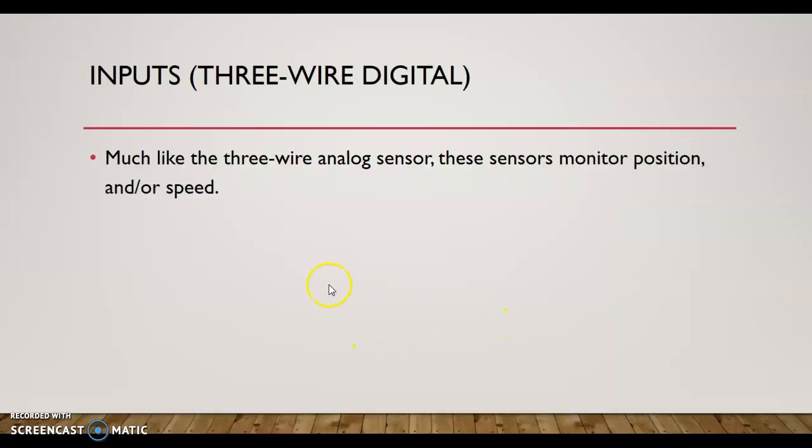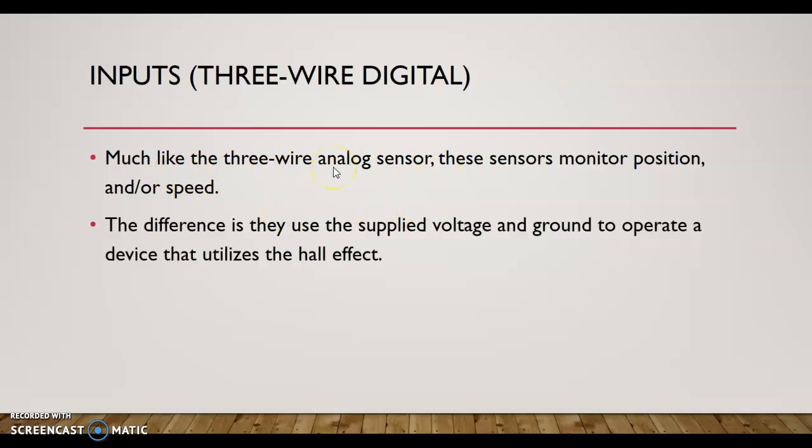Then there's the three-wire digital ones. Much like the three-wire analog sensor, these sensors monitor position and speed. The difference is these sensors are supplied a voltage and ground to operate a device that utilizes the Hall effect, and this effect will give a digital on-off signal on the signal wire. So instead of having an analog sine wave on that signal wire, this digital sensor is going to give a square wave that's on and off.